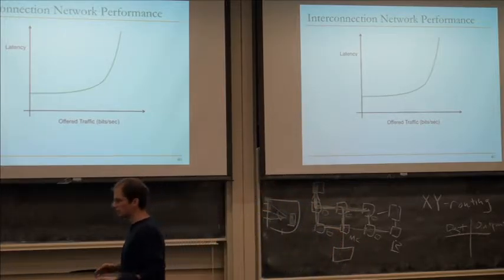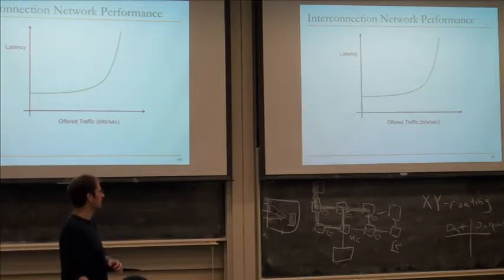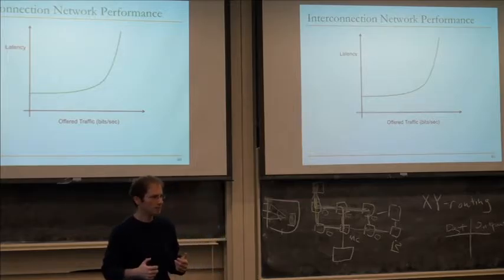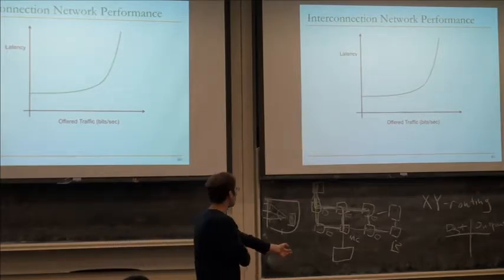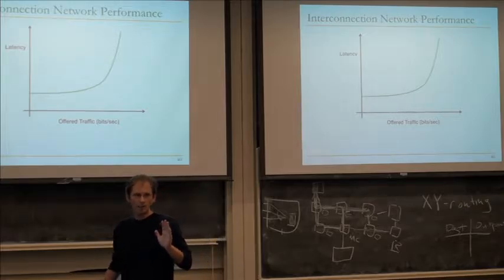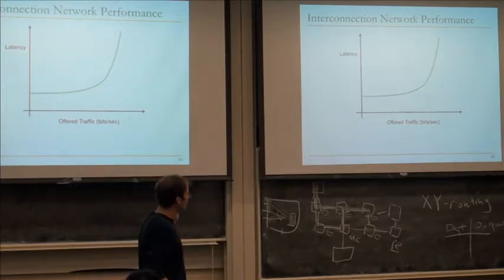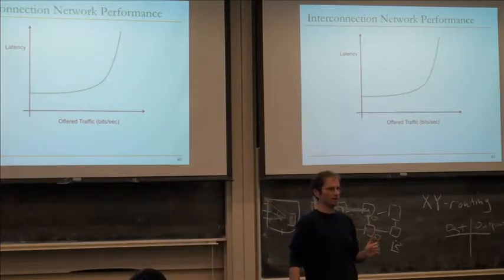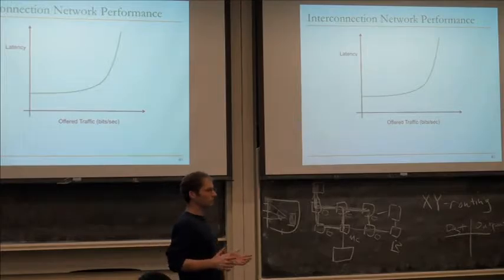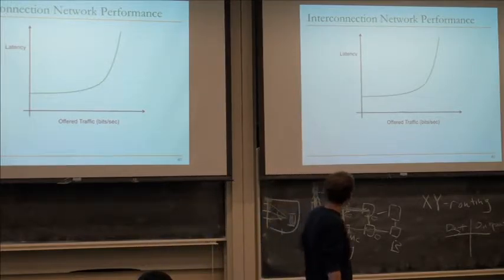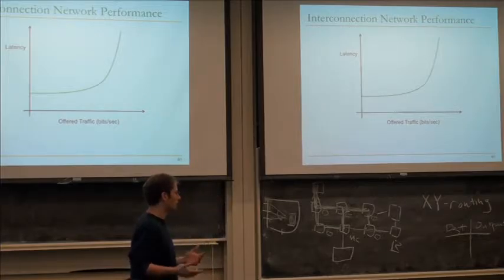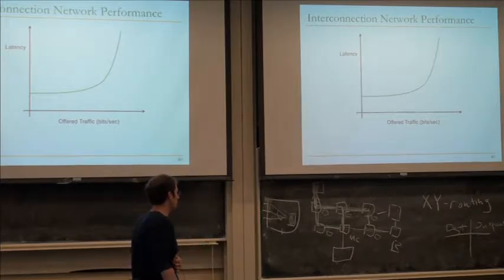For network performance, the canonical plot is the load-delay curve. The x-axis is offered traffic — the amount of data injected into the network per unit time per clock cycle. The y-axis is latency — the time for a single flit or packet to get from source to destination. At low offered traffic you have essentially some baseline latency with no contention. As you push more bits into the network, contention increases — packets bump into each other and wait in buffers — and queuing delay gradually takes over, increasing latency.